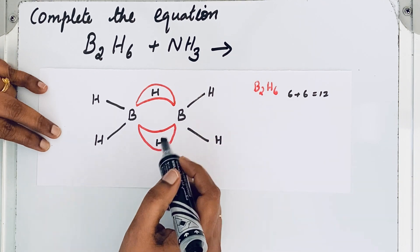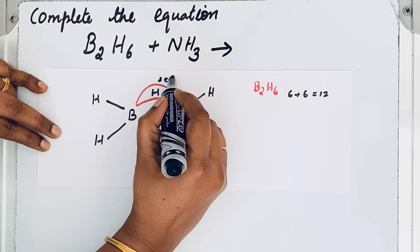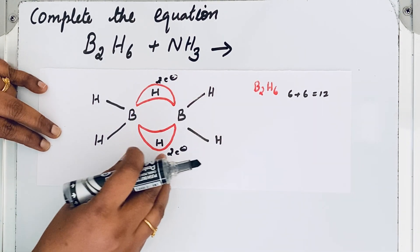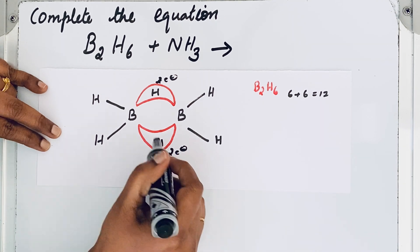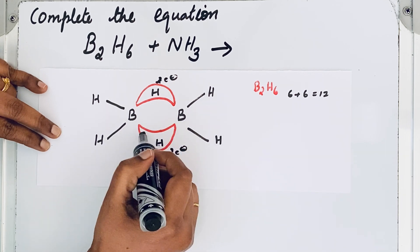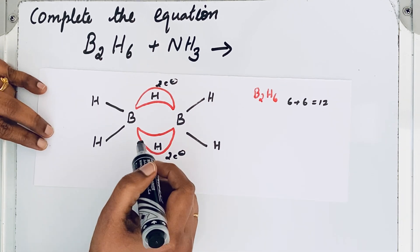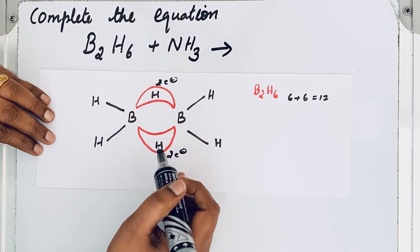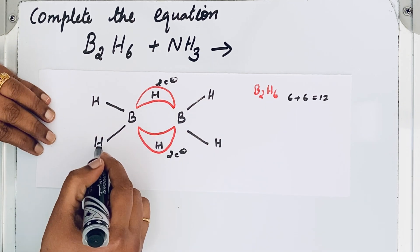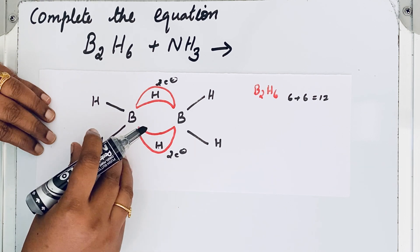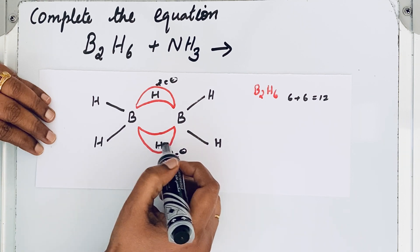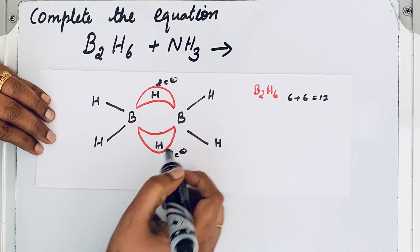Those four remaining electrons — two here and two here — are shared across three atoms each: boron–hydrogen–boron, forming a B–H–B bridge. That is why it is called a three-centered two-electron bond. The terminal B–H bond is a two-centered two-electron bond. The three-centered two-electron bond is also called a banana bond, bend bond, or bridge bond because of its structure.